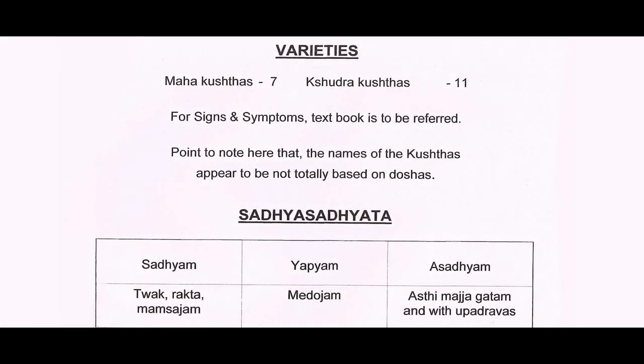Coming to varieties — Maha Kustas are 7, Shudra Kustas are 11. For signs and symptoms, every disease is discussed in different conditions. When once you take Kusta as a whole, the names of Kustas appear to be not totally based on dosha — they are once again related to Papakarma and other areas. Then — Sadya Sajita: Tvakrakta Mamsajam is Sadyam; Medojam is Yapyam; Asti Majjagatam with Upadravas is Asadam.